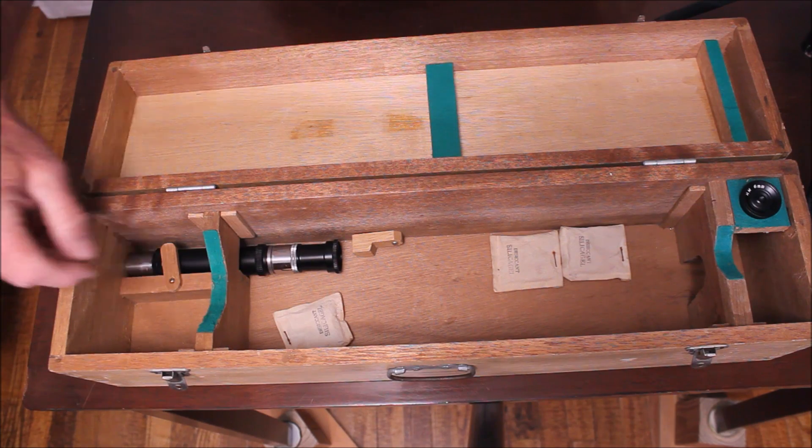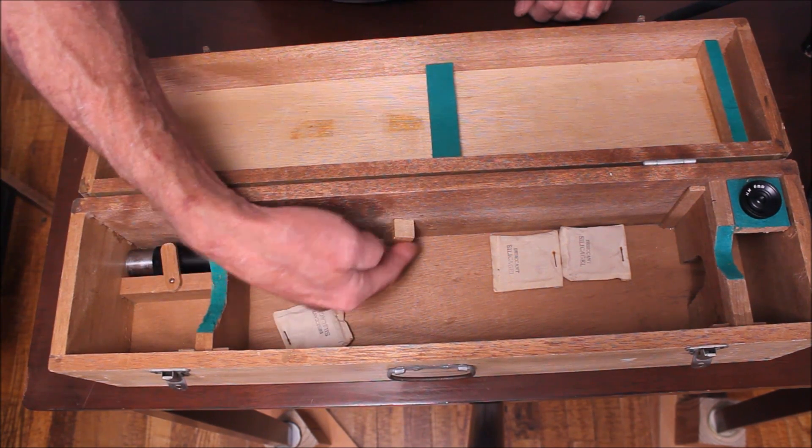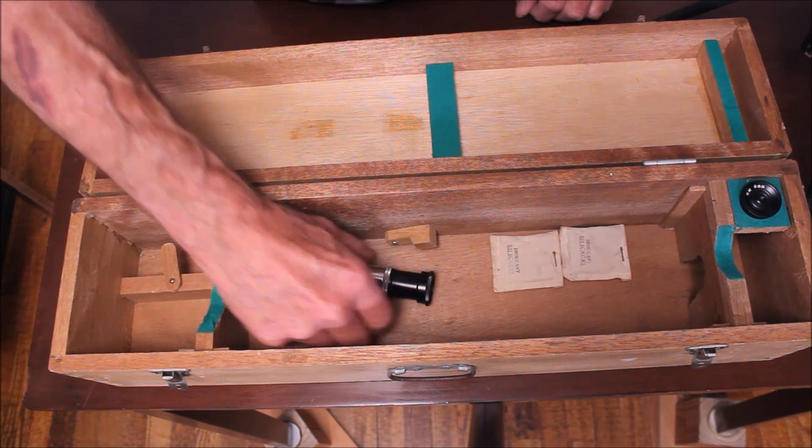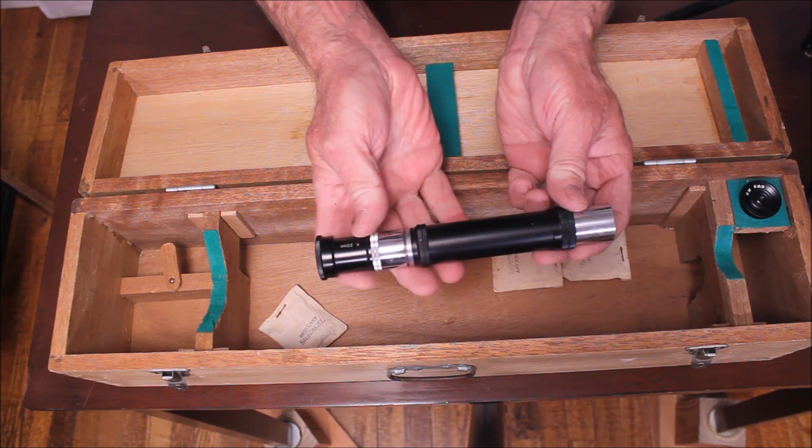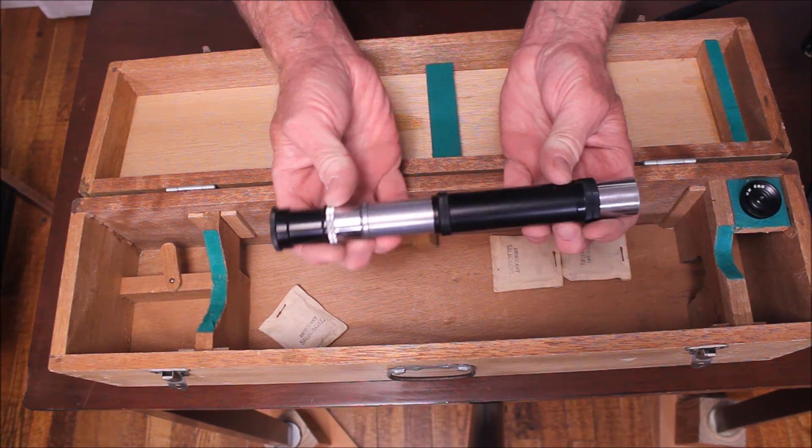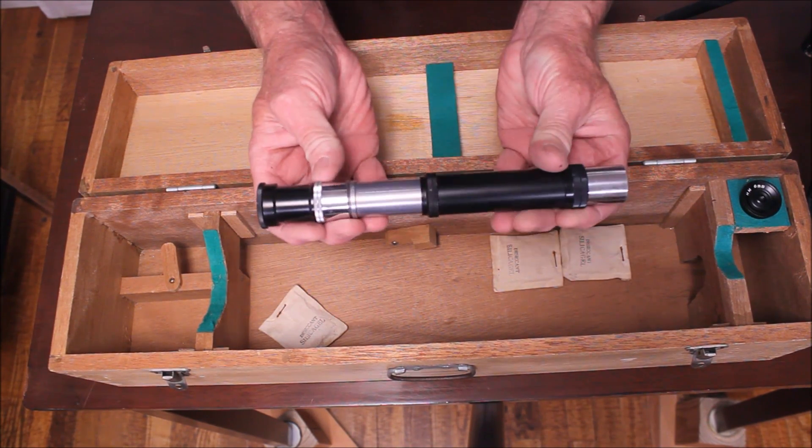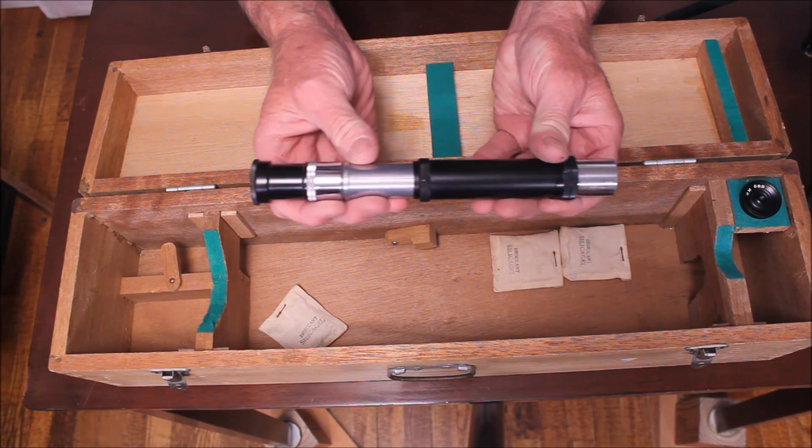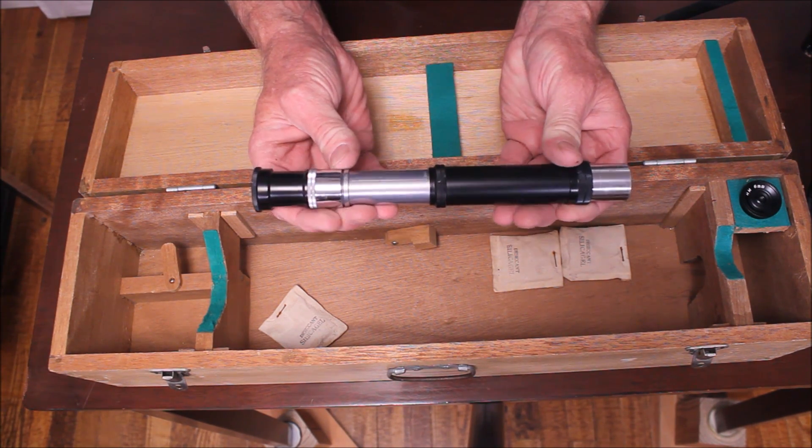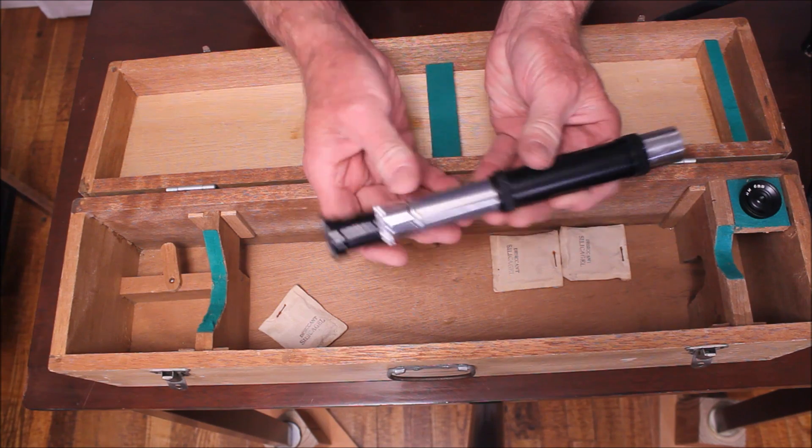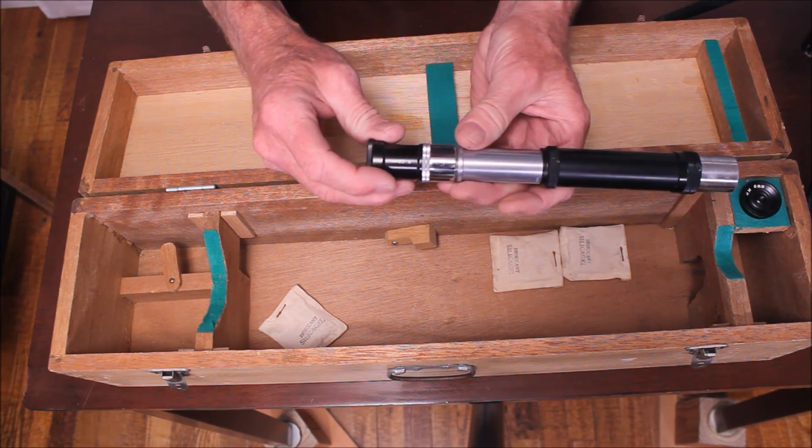Inside here we have a couple of interesting things. This guy here—let me pull it out. That is actually an image-erecting eyepiece with variable power. It says it goes from 25 to 60 power. I presume that's with the 22 millimeter eyepiece attached.